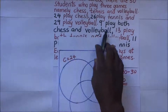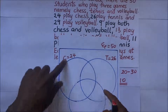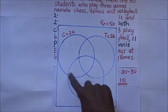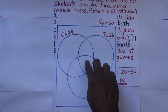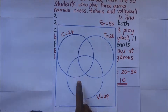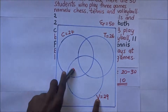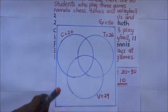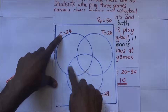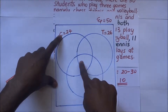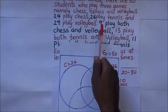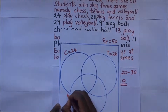9 play both chess and volleyball, so the intersection of chess and volleyball contains 9 students. These 9 students could also include those playing tennis, so we can't place this number in the chess-and-volleyball-only region. Those 9 play both chess and volleyball, which can also include those who play tennis. We put 9 there momentarily.